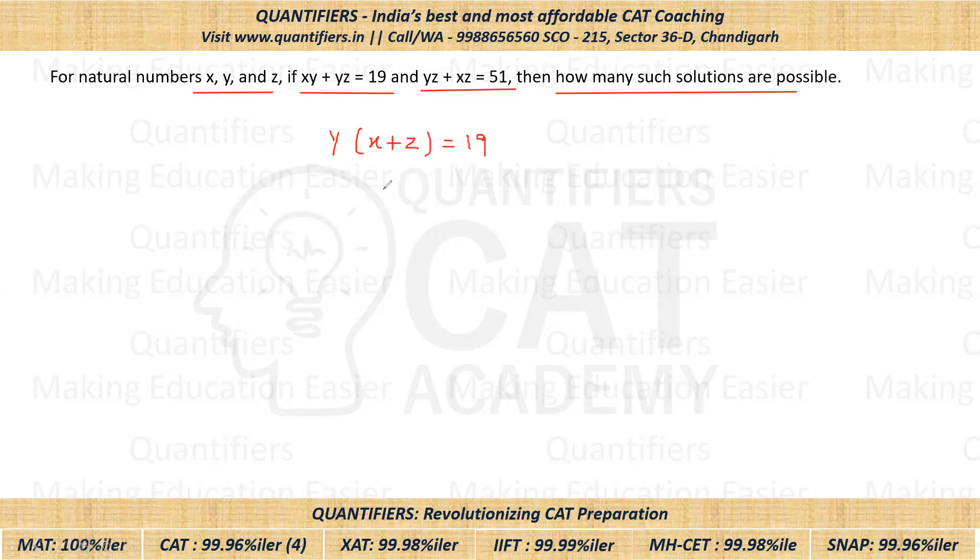Now students, see 19 is prime. And if you break 19 into two parts, the only possibility is 1 and 19. One of them will be 1 and the other will be 19. Now see, the only possibility is that y has to be 1. Because if you don't put y as 1, then you have to put y as 19, and in that case x plus z will equal 1, which is not possible because x, y, and z are natural numbers.